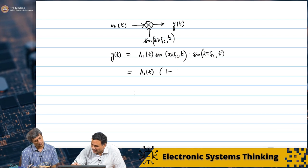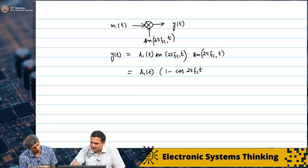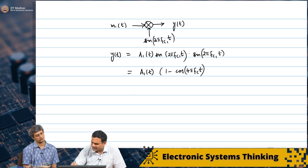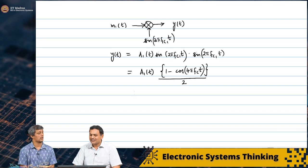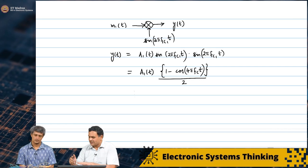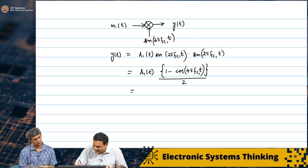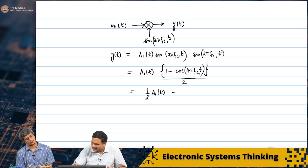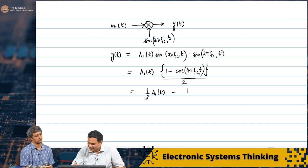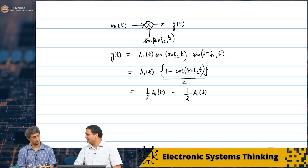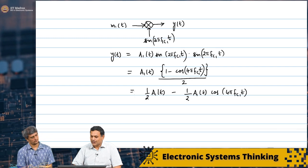It is important that everybody remembers the trigonometric identities — they will keep coming again and again. So Y of t is A1 of t times 1 minus cos of 4 pi FC1 t, divided by 2. Now we find that we are actually getting 2 components: half A1 of t, and also a second harmonic of the carrier. So you are getting what looks like an AM modulated signal which rides on top of the second harmonic of the carrier signal.